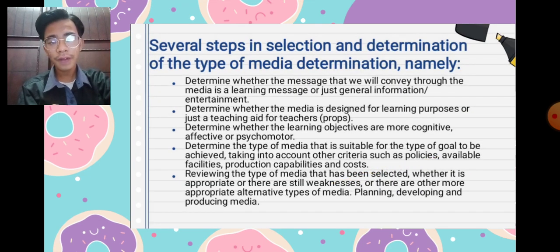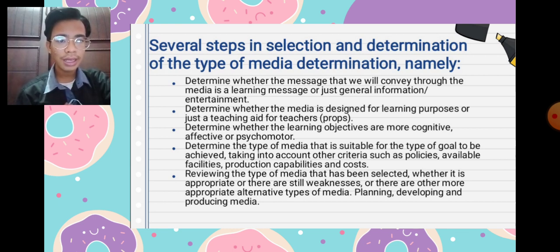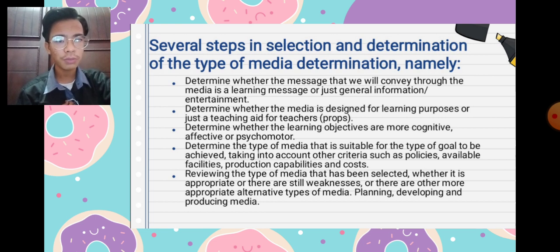There are several steps in the selection and determination of the type of media. First, determine whether the message to be conveyed through the media is a learning message or just general information or entertainment. Second, determine whether the media is designed for a learning purpose or just for teaching at the teacher's discretion. Third, determine whether the learning objectives are more cognitive, affective, or psychomotor. Fourth, determine the type of media suitable for the type of goal to be achieved.